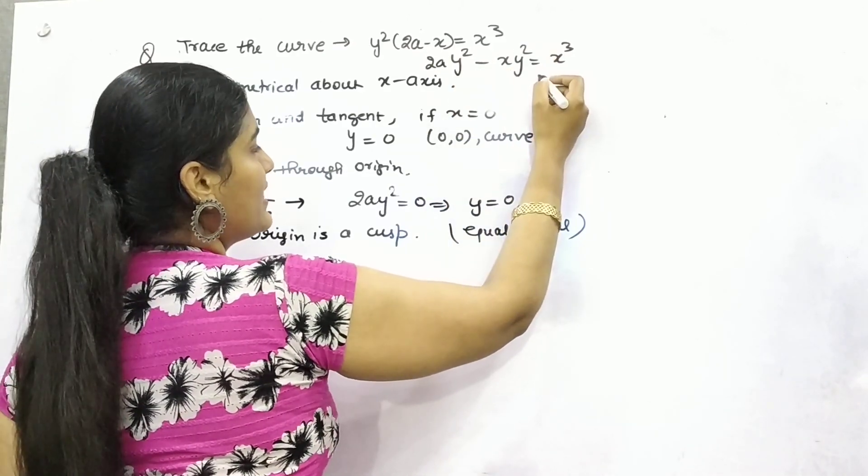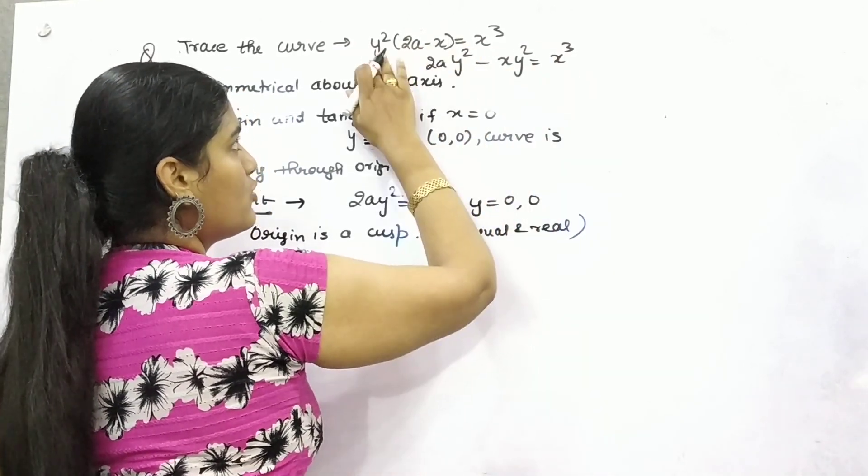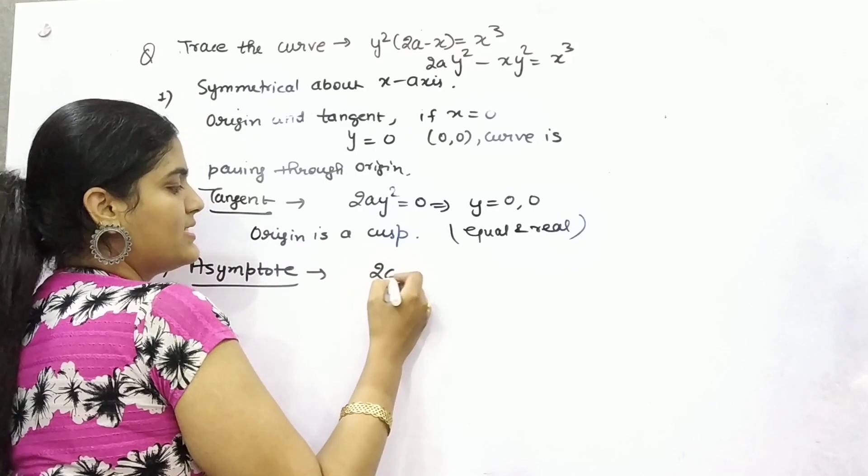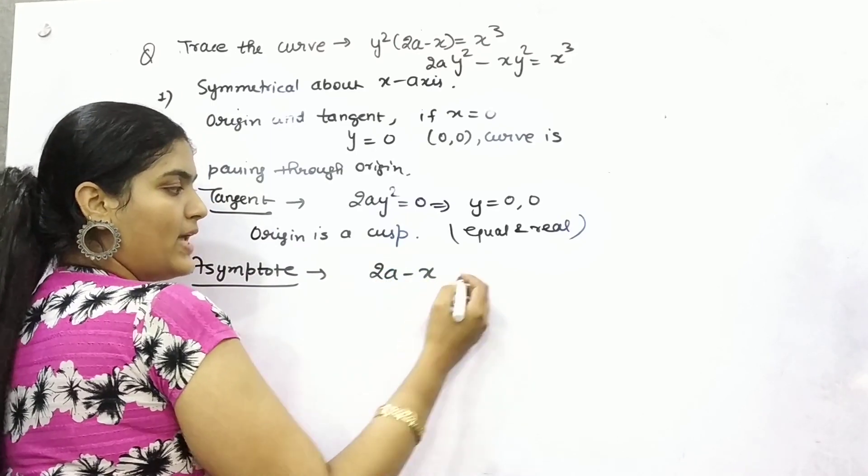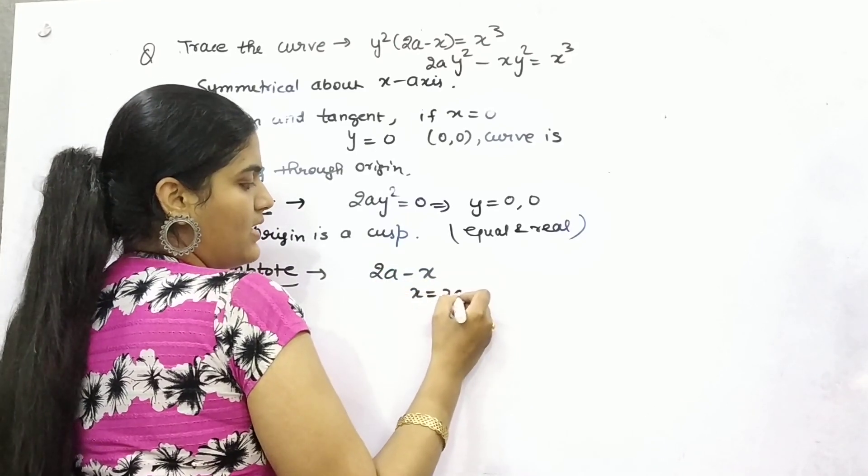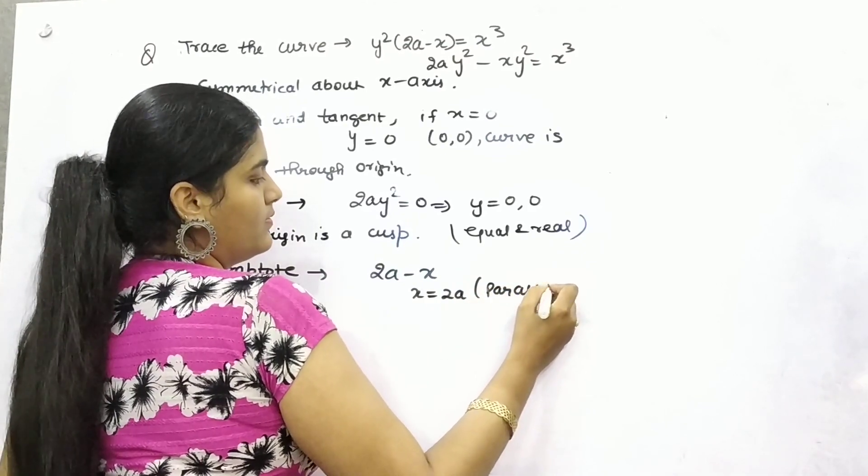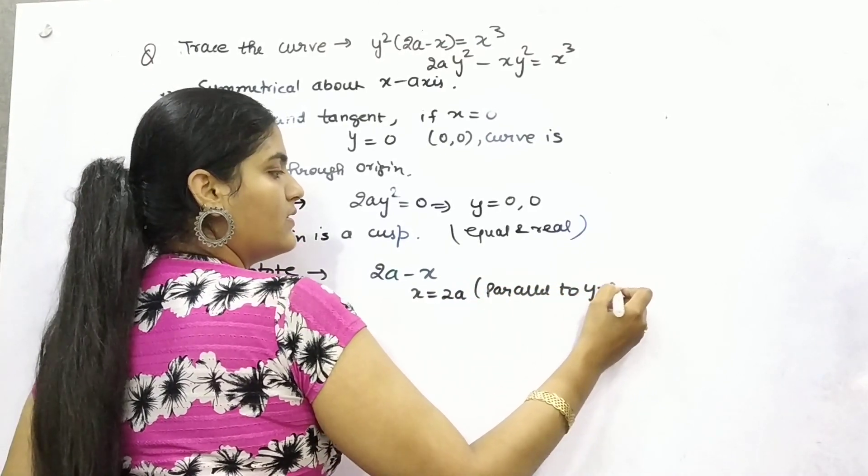Now for y-axis, you can take y² as common. So coefficient of y² is 2a - x. So x is 2a, which is parallel to y-axis.